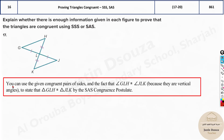Let's see the sample answer. The given congruent pairs are used to prove that the sides are congruent. Then the fact that angle GLH is congruent to angle JLK — because they are vertical angles, so they are congruent — means that triangle GHL and triangle JLK are congruent to each other by the SAS congruency postulate.